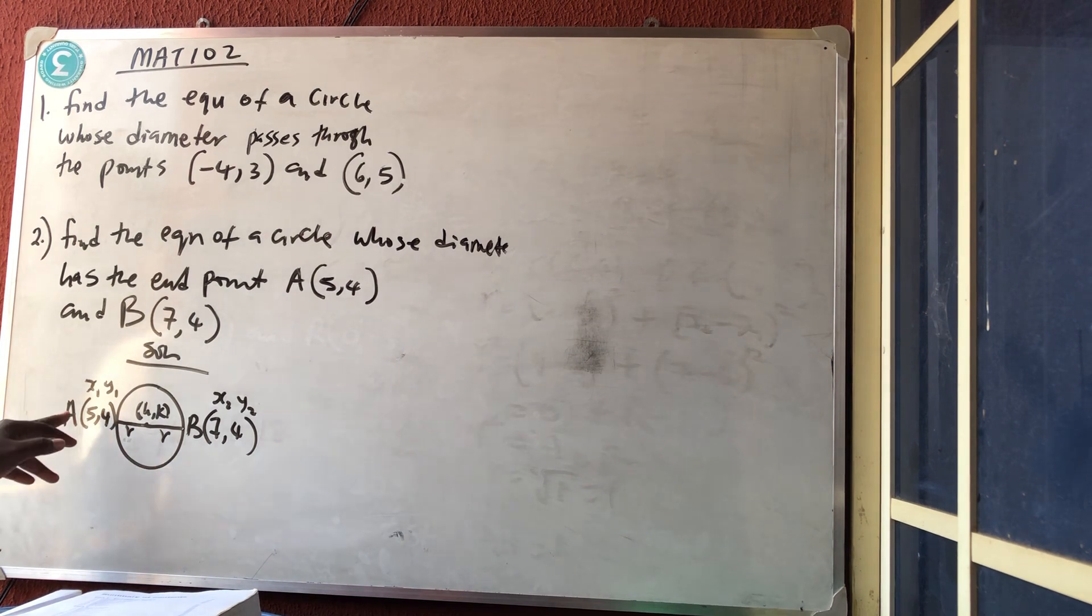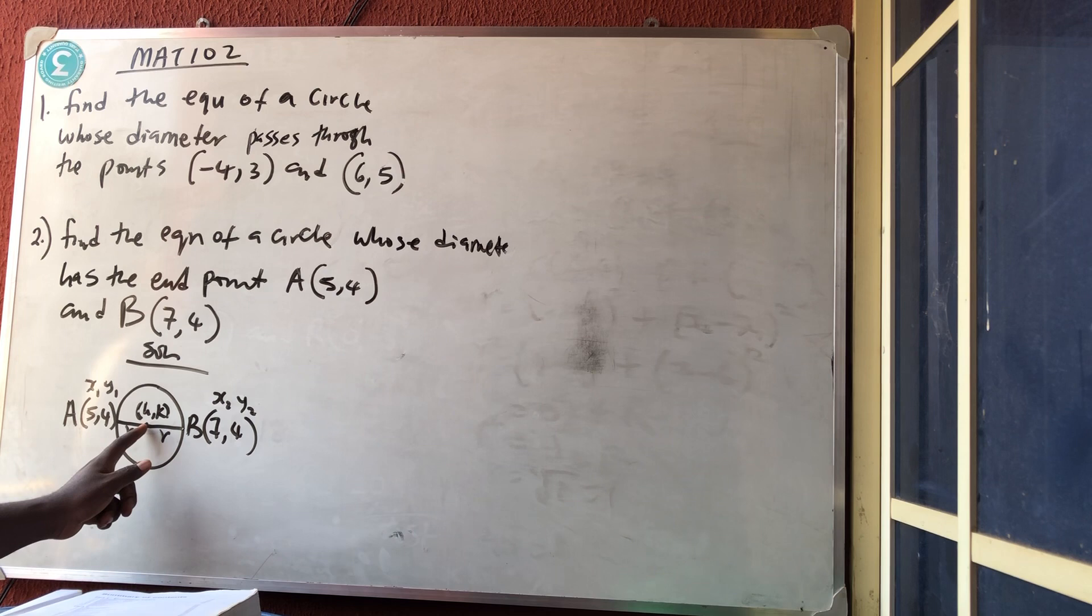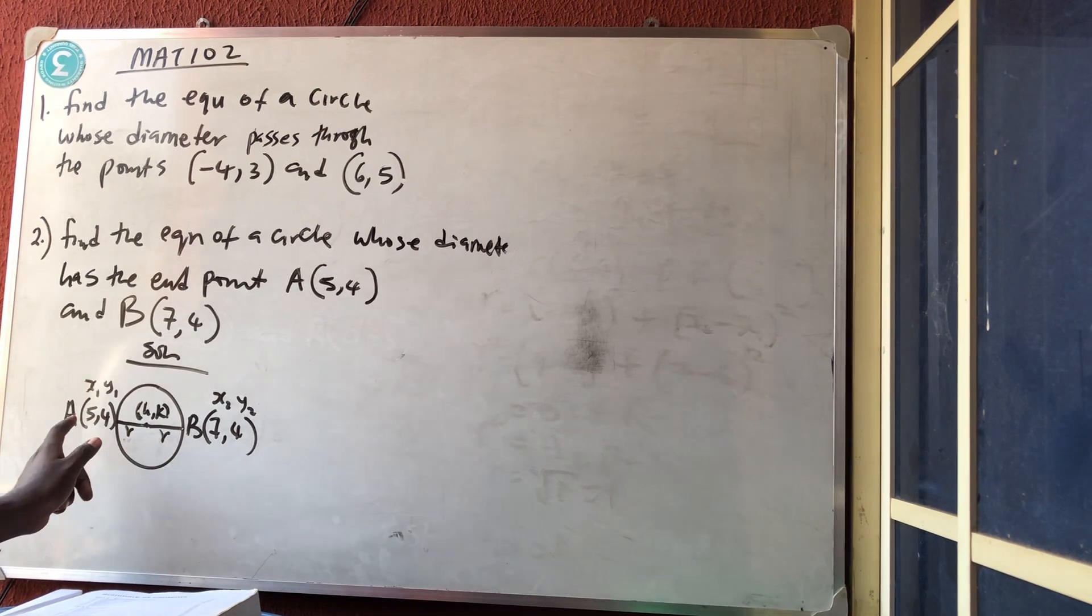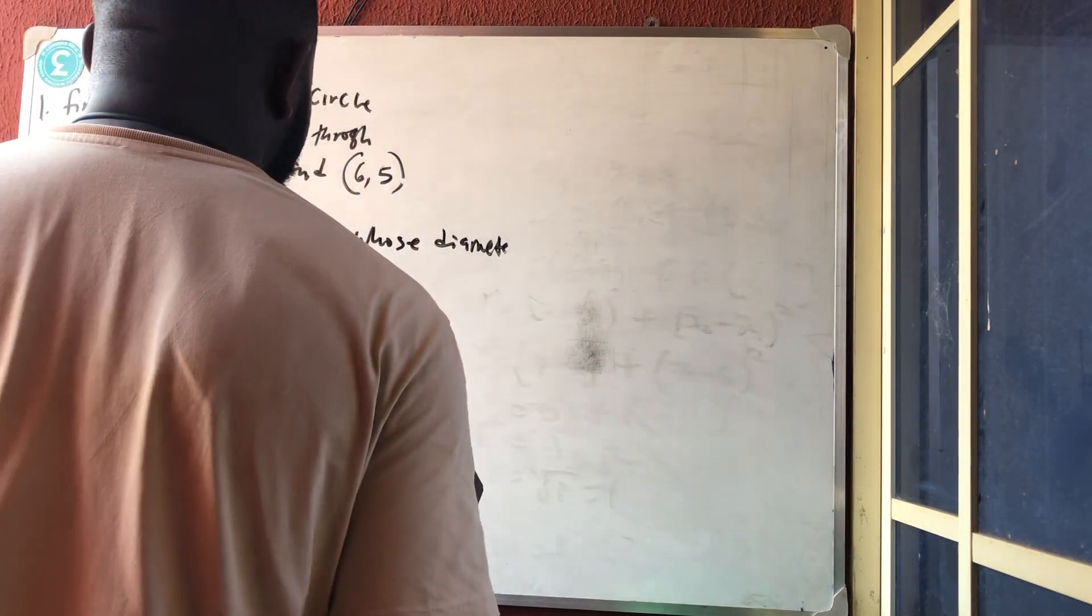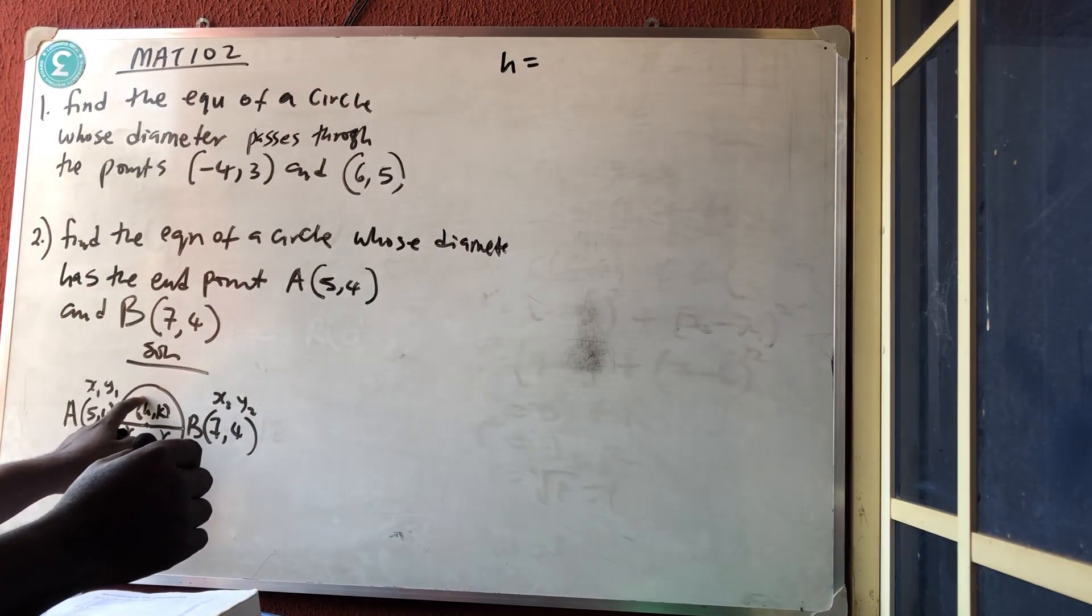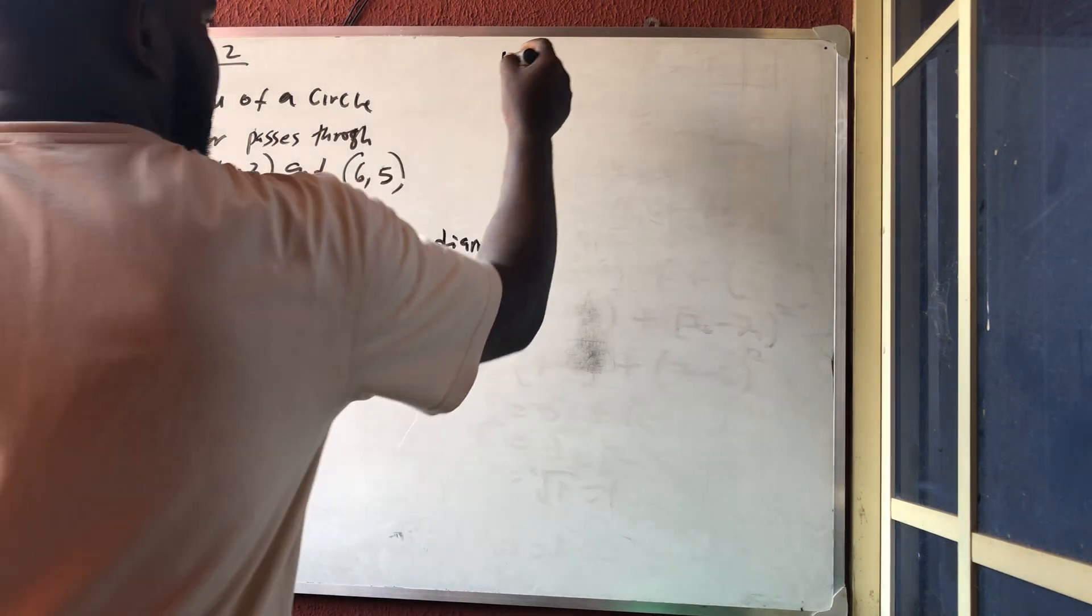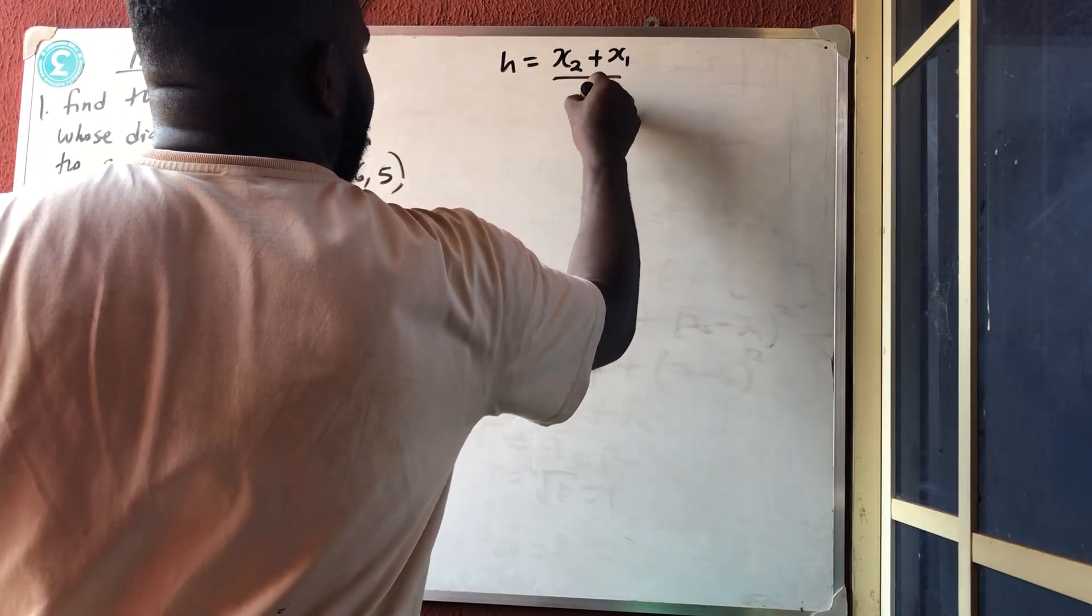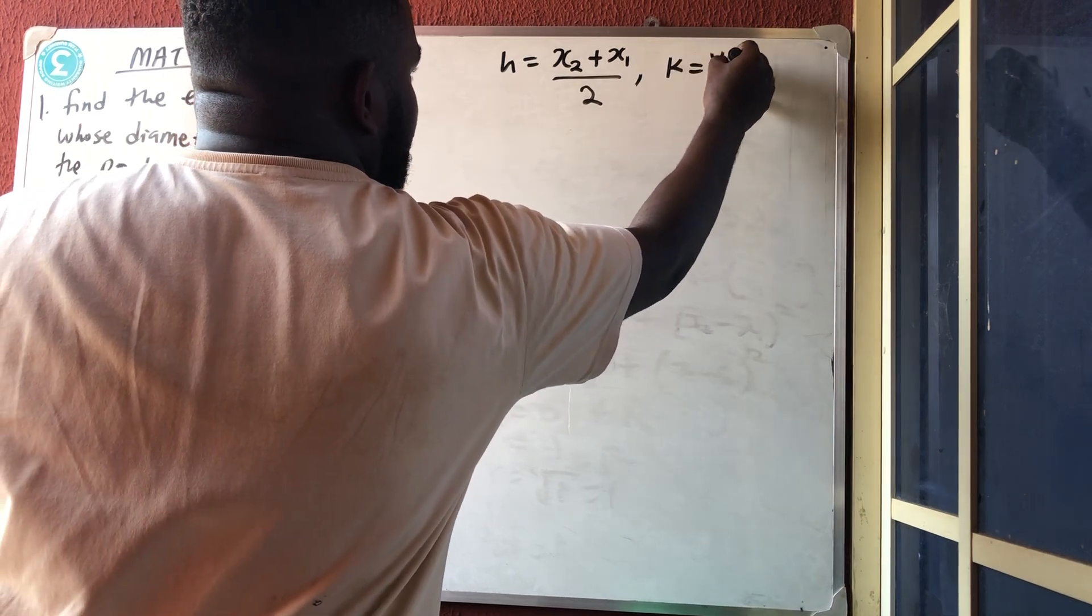They gave us these points. Let's call this x₁,y₁ and x₂,y₂. The center of this circle is the midpoint of this line. I taught you in straight line how to get the midpoint of a line. So let's get the midpoint for h. h is the x part and k is the y part. So I'm going to have x₂ plus x₁ divided by 2. For k it's y₂ plus y₁ all over 2.